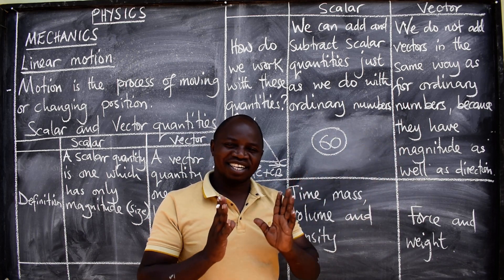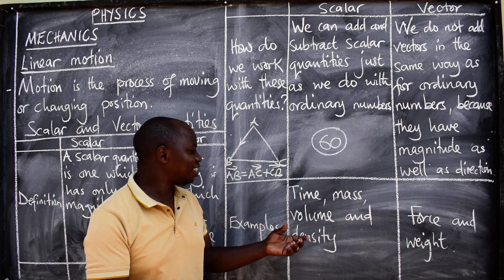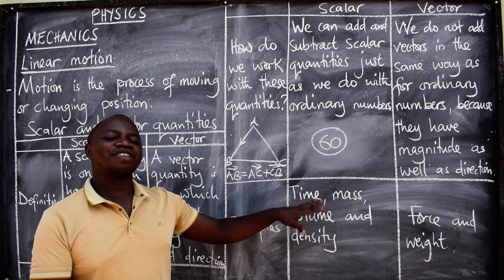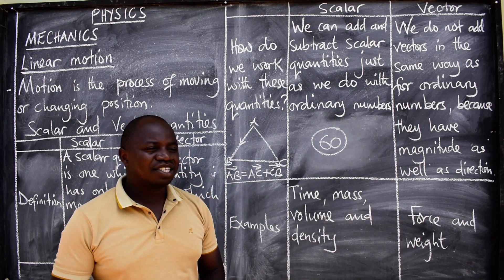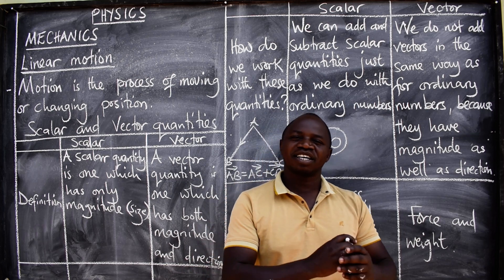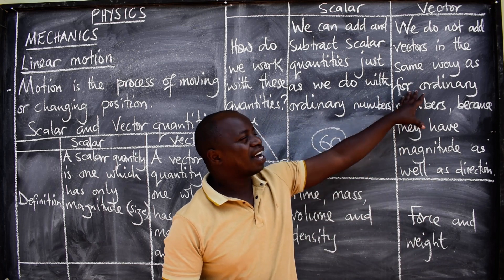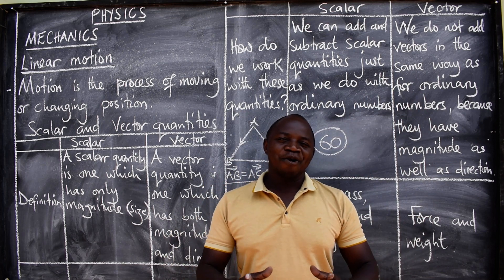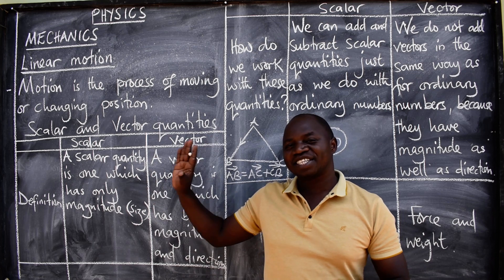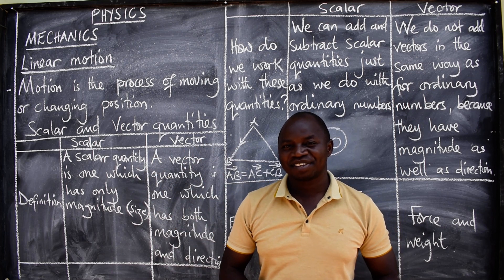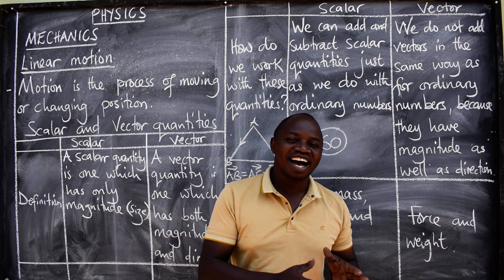Some examples of scalar quantities are: time, mass, volume, and density — and there are many more. For vector quantities, we have force, weight, acceleration, displacement, and velocity — so many examples. Ladies and gentlemen, I hope at this point you have picked up the difference between scalar and vector quantities. Let's now move on and look at distance and displacement.